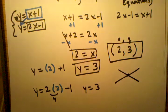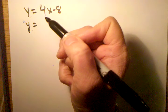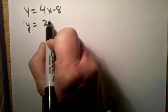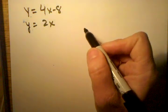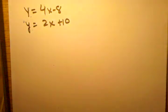Okay, so let's take another example, slightly harder. Let's do y equals 4x minus 8. This is another set of two linear equations, y equals 2x plus 10.